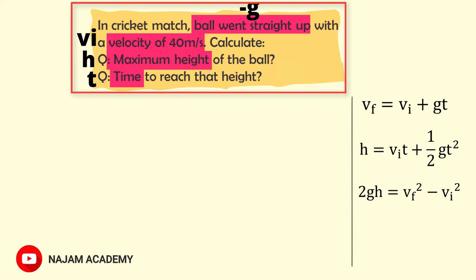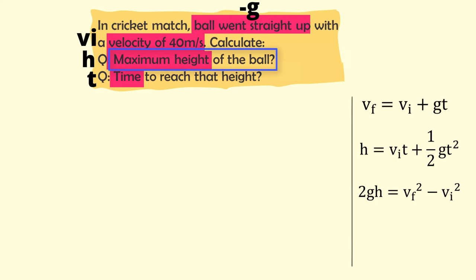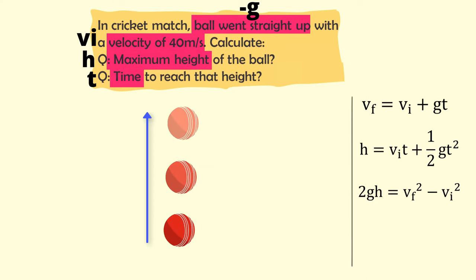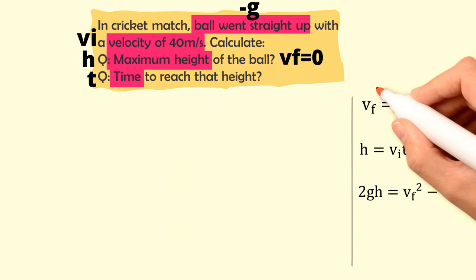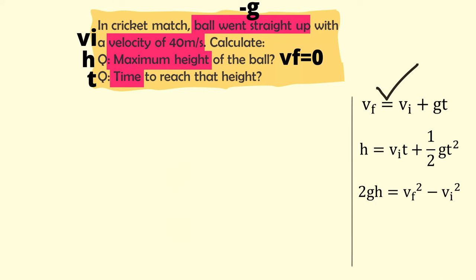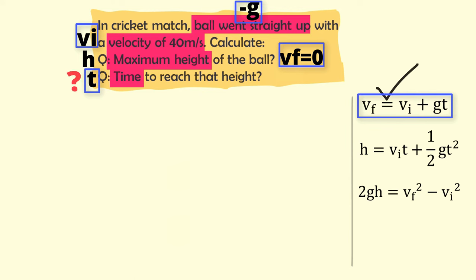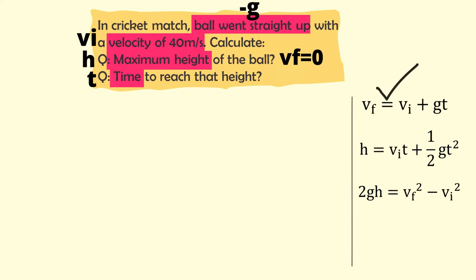Reading again: the ball went straight up with velocity 40 m/s — calculate maximum height. Remember, when the ball reaches maximum height, its final velocity vf becomes 0. Now all four variables in the numerical — vf = 0, vi = 40 m/s, g = −9.8 m/s², and t — match all four variables in the equation vf = vi + gt. So we can use this equation.